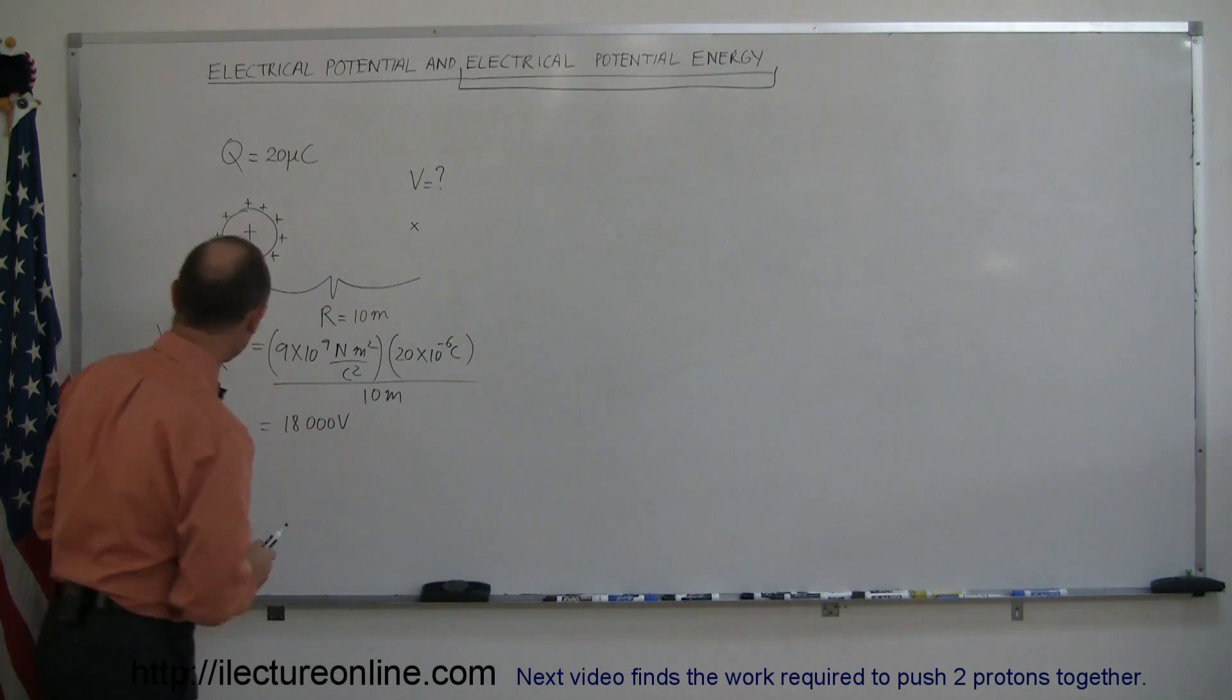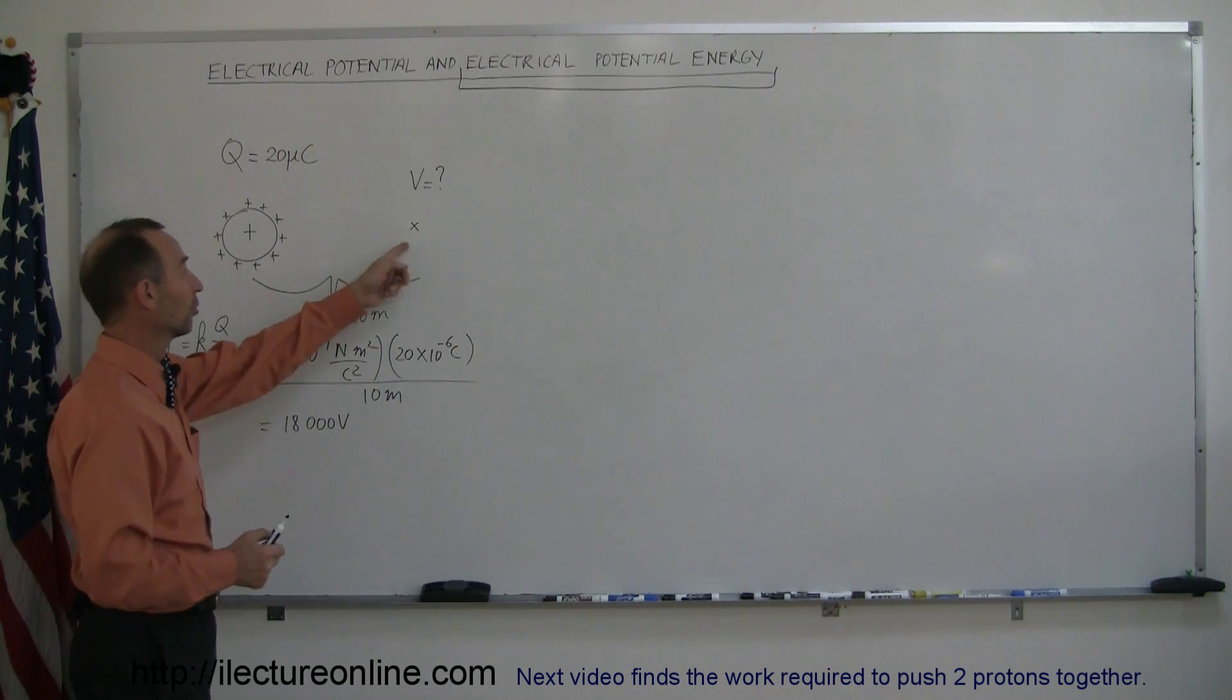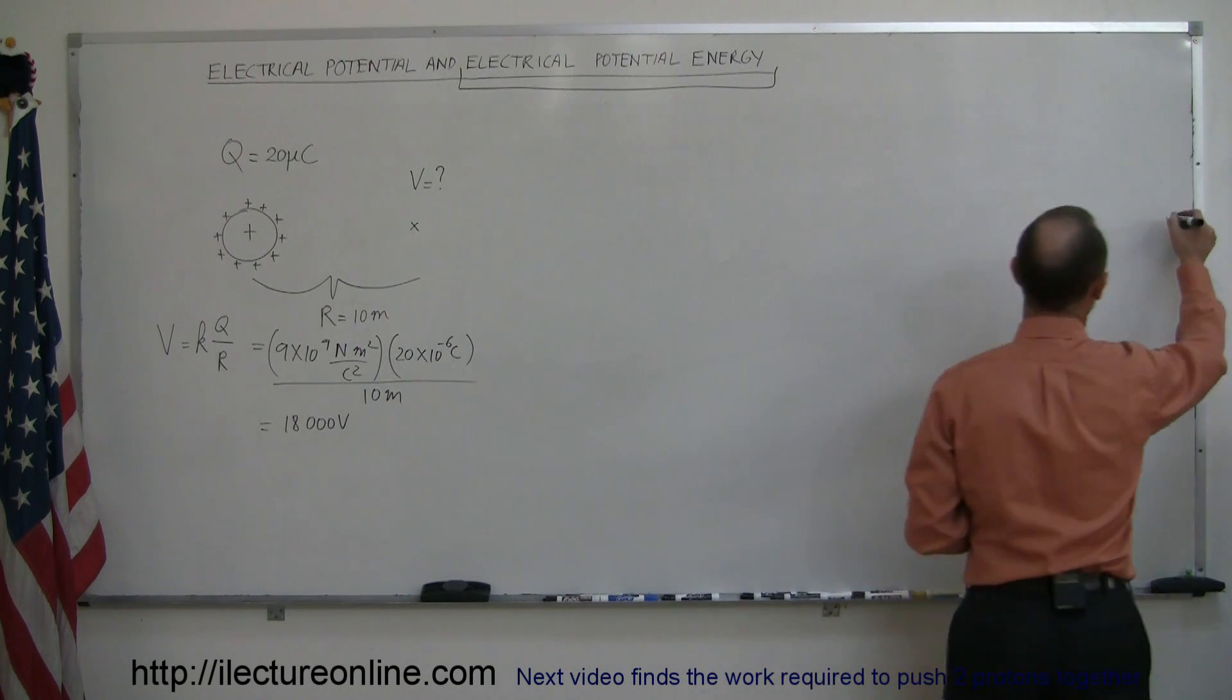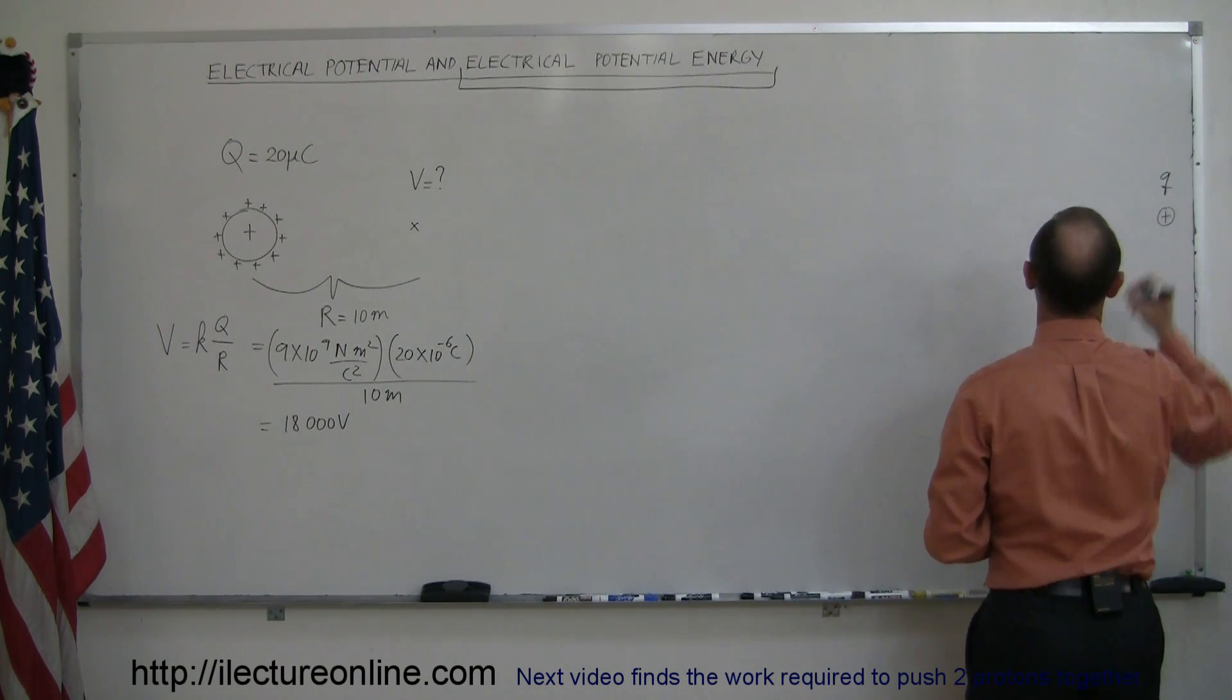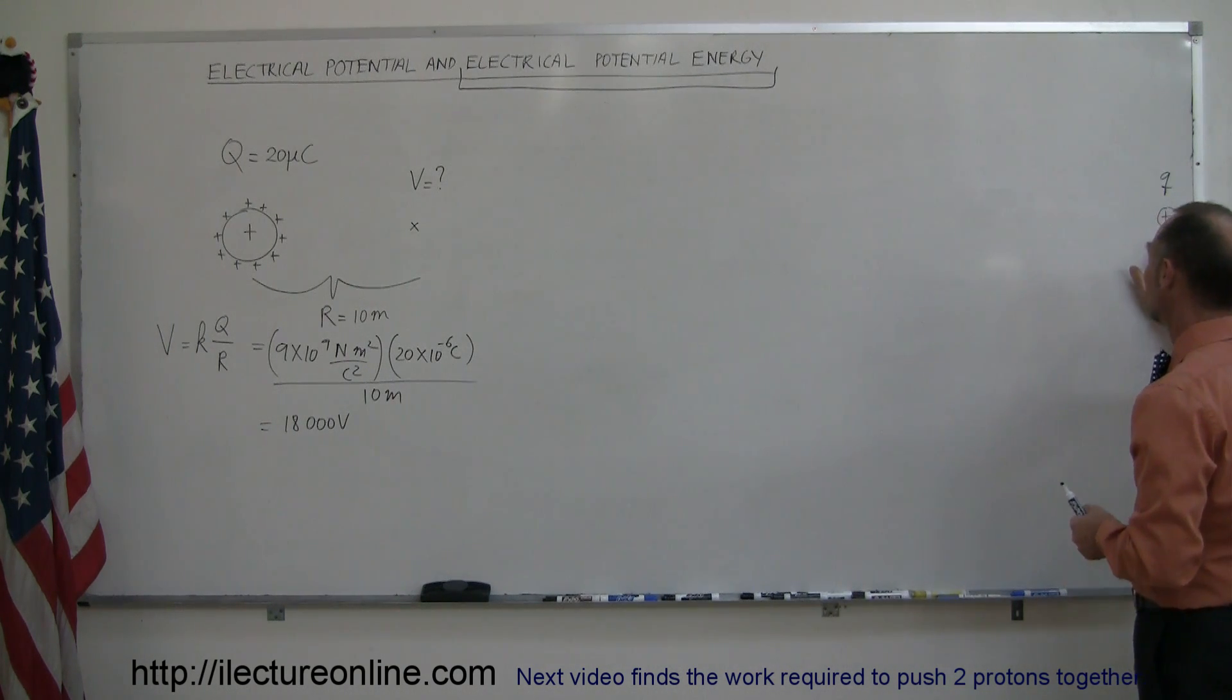But the question is, how do we come up with that equation in the first place? Let me explain how that works. The way we find out the potential near a charge, we can imagine that we put a little test charge way out there at infinity, and let's call that Q. You can imagine that you're so far away that the potential at Q is equal to zero, so V is equal to zero at X equal infinity.